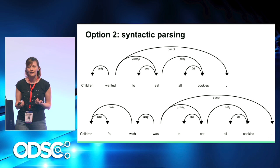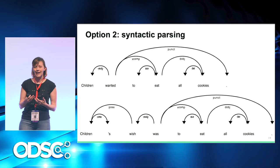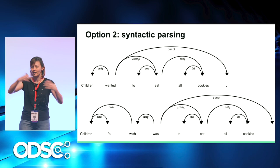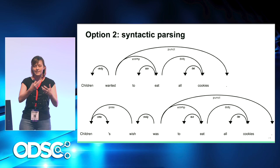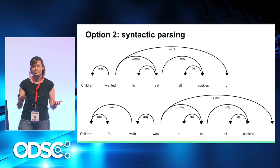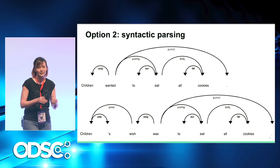In reality, the doer of the action is not always the subject, and the action is not always presented by a verb. Also, paraphrases would have different syntactic representations. For example, 'children's wish was to eat all cookies' has the same meaning as 'children wanted to eat all cookies,' but the syntactic trees are now different. In the first sentence, 'wanting' is expressed with a verb, and in the second with a noun. Children in the second example are no longer the subject of anything.